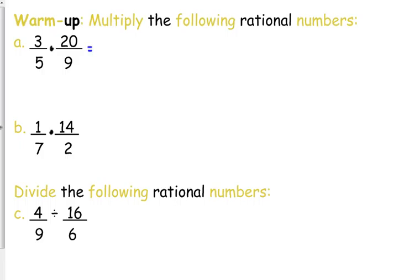You could start by, when you multiply fractions, you multiply straight across the numerator, you multiply straight across the denominator, and then recognize that both 60 and 45 are divisible by something bigger, 15. 60 divided by 15 is 4, 45 divided by 15 is 3, so 4 thirds.